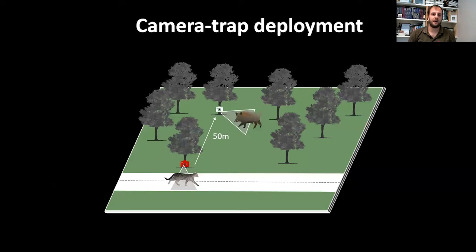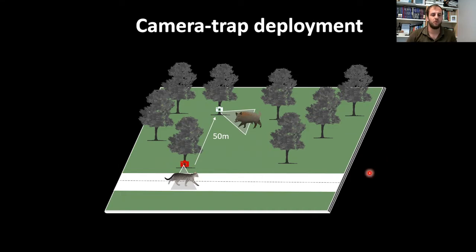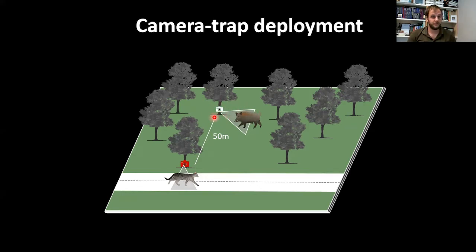At each camera trap site, we deployed one camera perpendicular across an established road or trail, as predators including feral cats are expected to use roads to traverse the landscape more efficiently. A second camera was placed 50 meters into the bush, perpendicular to the road, in case feral cats were avoiding roads. This bush camera also monitored the broader wildlife community — such as musky rat-kangaroos — that might serve as prey for feral cats.